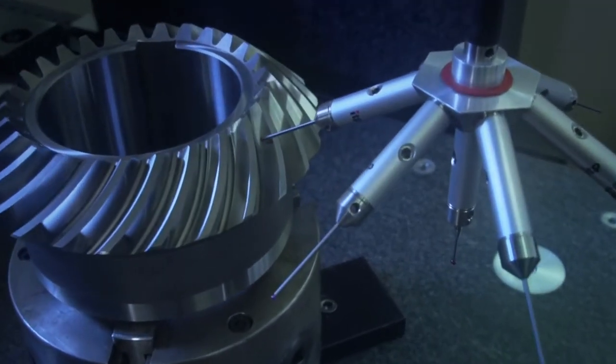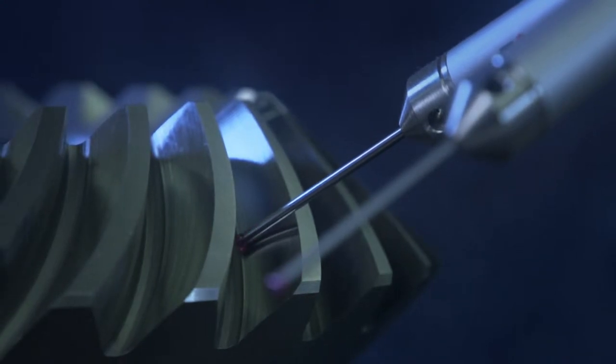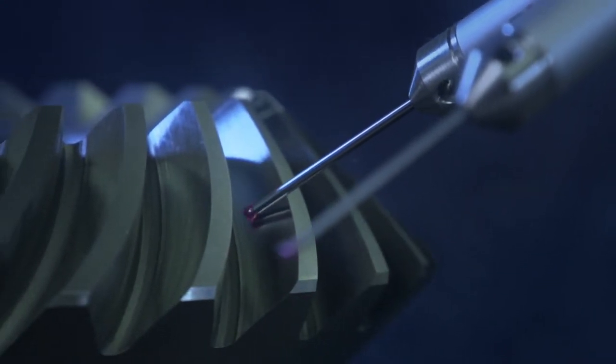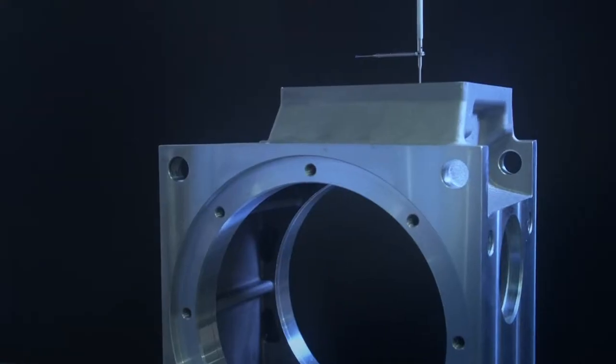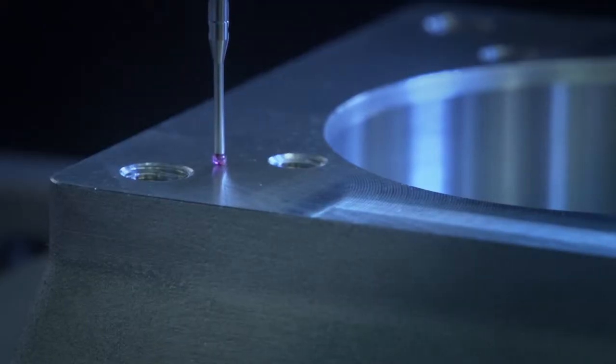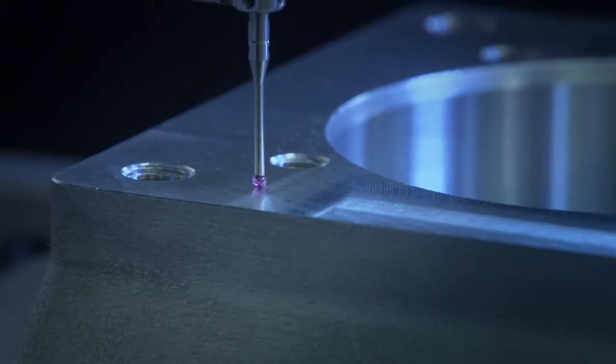Quality assurance for the bevel gears is carried out in the measuring lab, where highly accurate 3D measuring machines are used. All results are documented in accordance with customers' specifications. Only then are the gearboxes assembled.